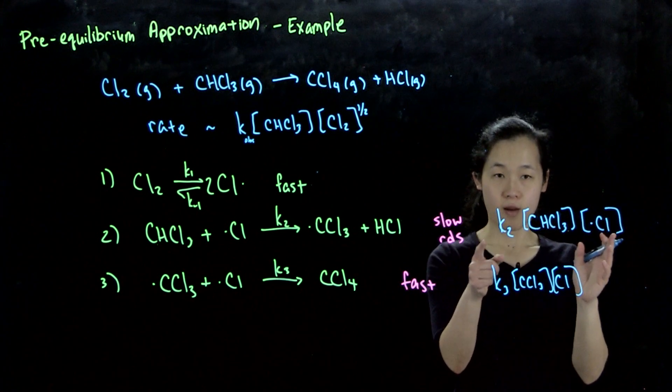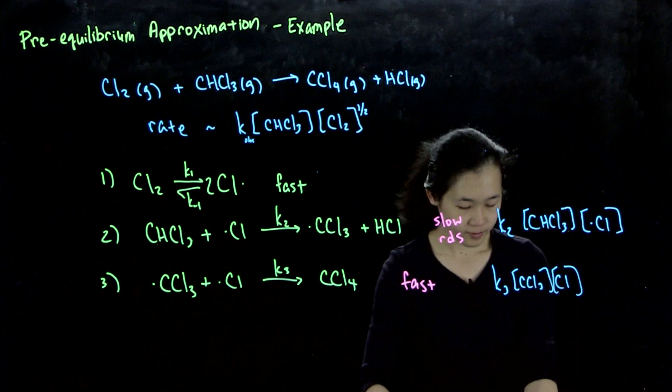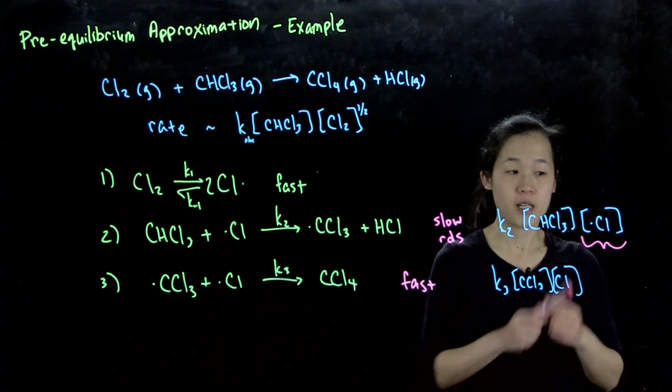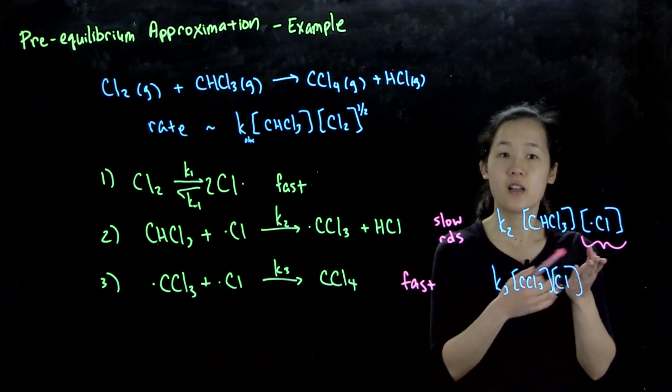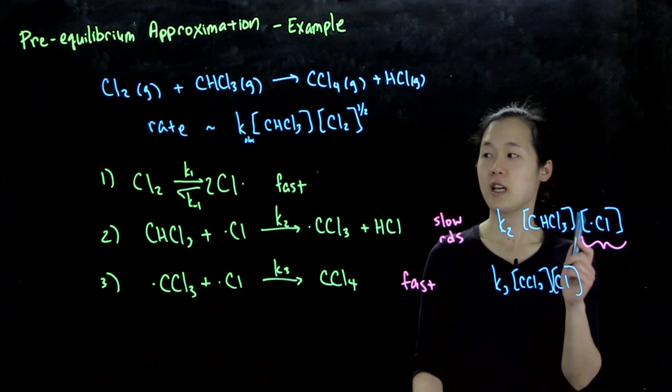Here is our second step. This would be the rate we care about because it's the rate-determining step. But the problem is we have this component - the rate is dependent on an intermediate. We can't express reactions in terms of intermediates, so we have to figure out the concentration of the chlorine atom.